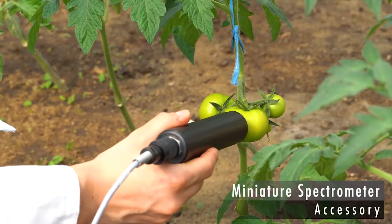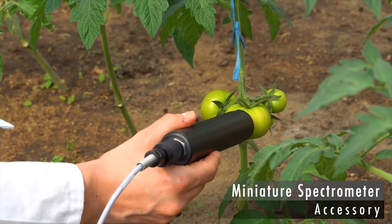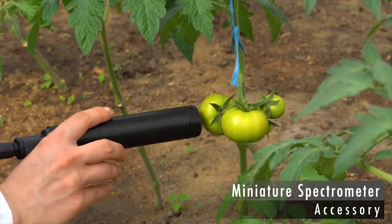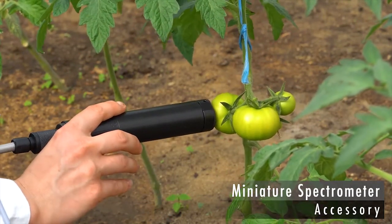Without the magnetic sample holder, reflectance spectra of fruits can be recorded to monitor the progress of maturation.